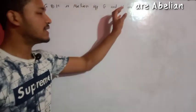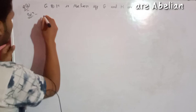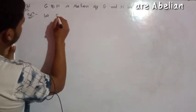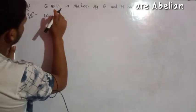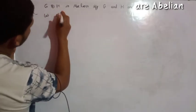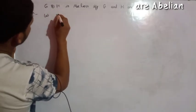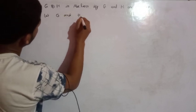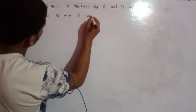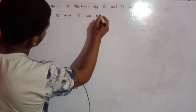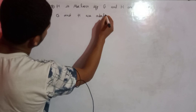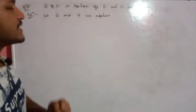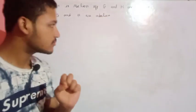Let us suppose Z and H are Abelian. So, Z is Abelian and H is Abelian.